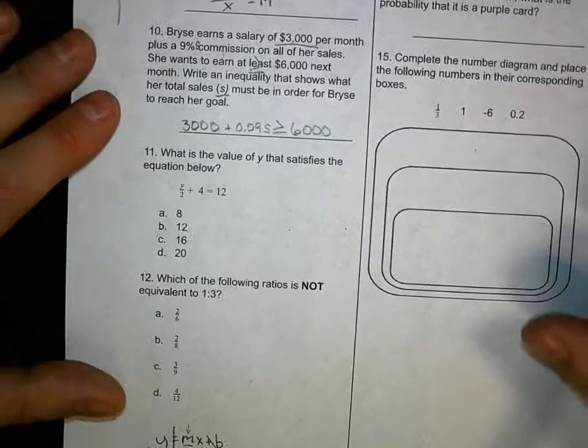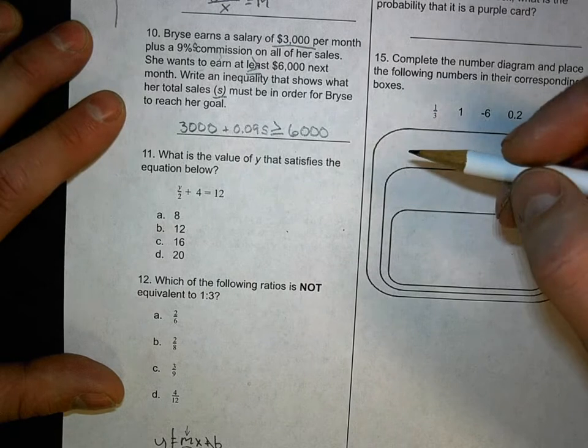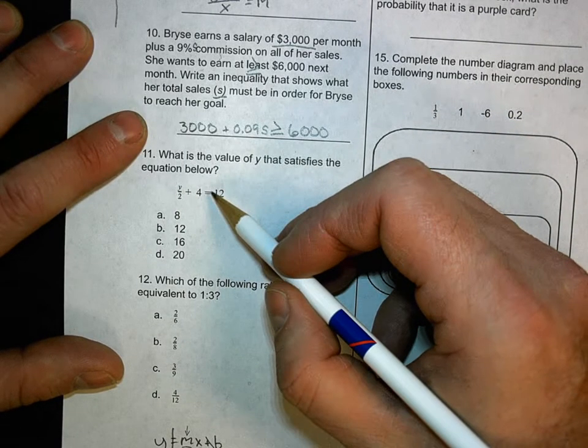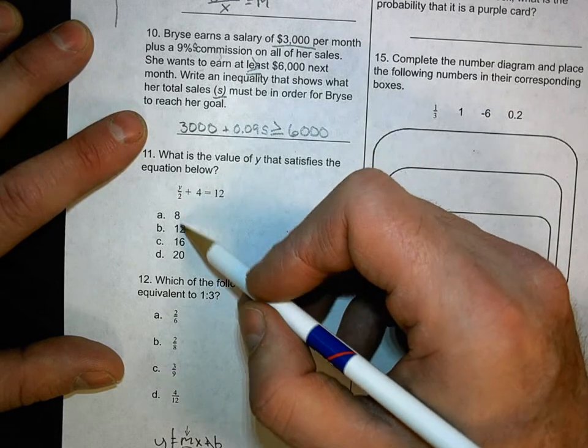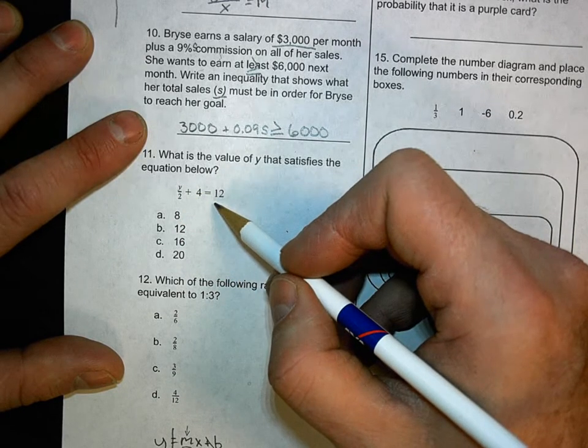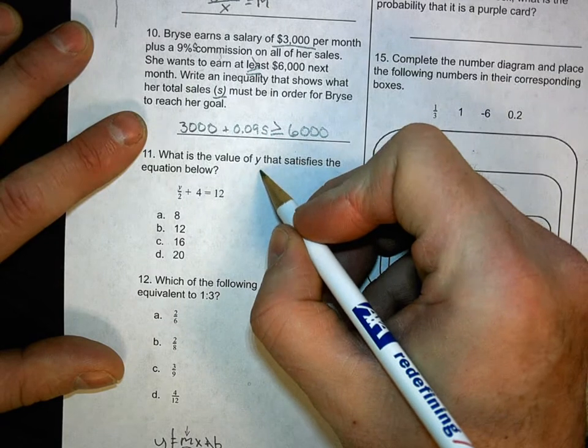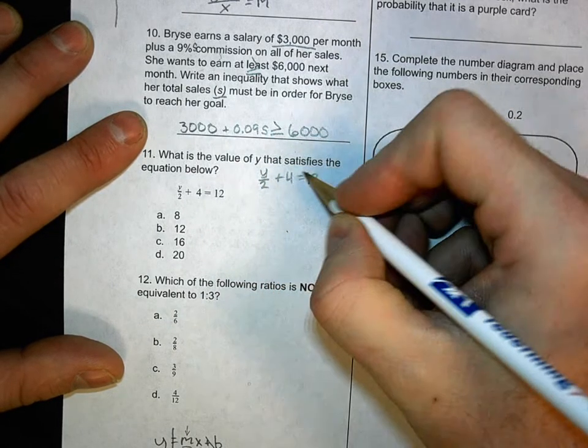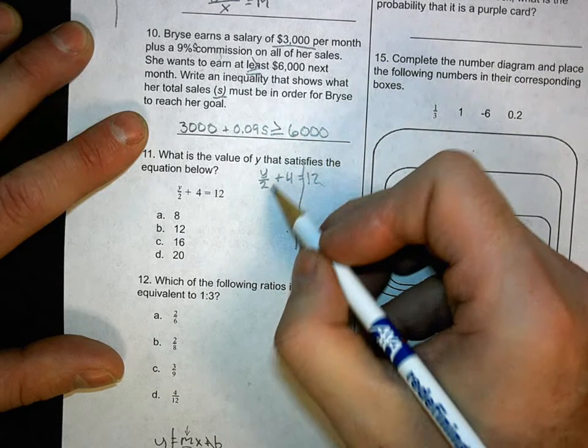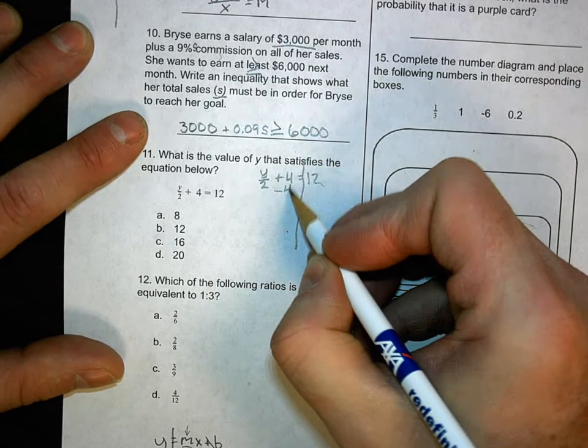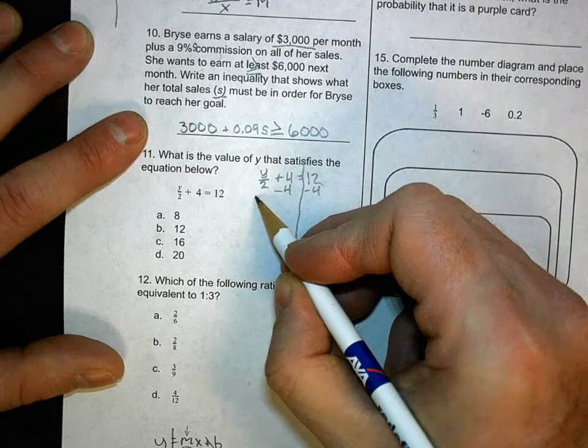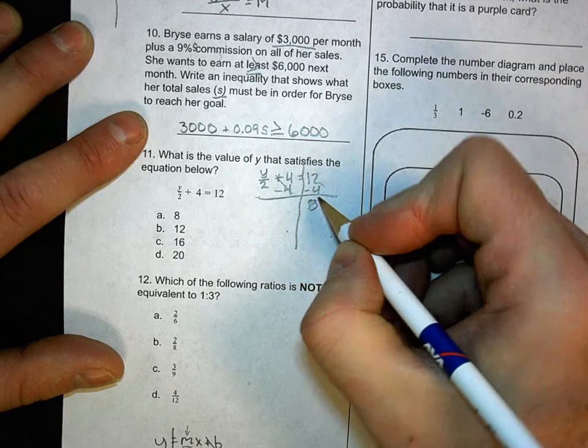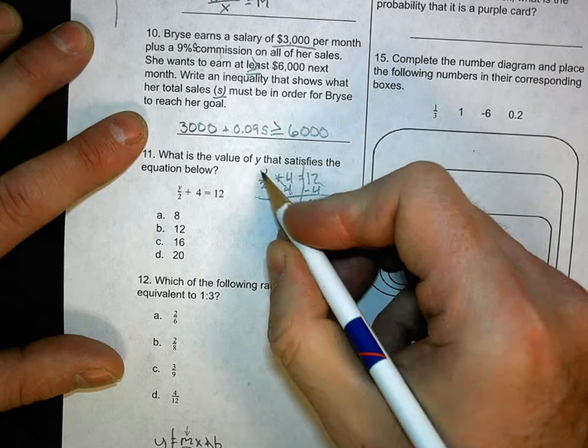All right. So, let's look at number 11. What is the value of y that satisfies this equation below? So, this one we can solve. And I'm going to solve it. But I'm also going to tell you, you could simply place these numbers in place of y. And see which one worked. But I'm going to solve it because, well, I'm the math teacher. Y over 2 plus 4 equals 12. Draw my line. Leave this alone. It's the number with the variable. I'm going to subtract the number here. So that goes away. 12 minus 4 is 8. And that equals, bring that y over 2 down, y over 2.